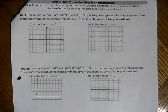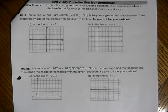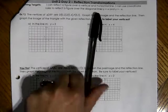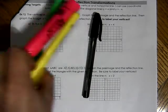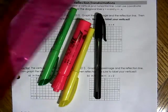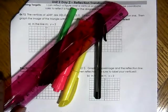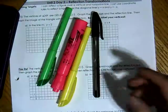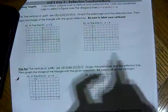Hi everyone, for today's lesson we are going to be practicing some examples of using our reflection transformation. You will need something to write with, preferably some colors, and a straight edge. A straight edge can be a ruler, it can be the side of your cell phone, it can be your notebook — anything can constitute a straight edge.